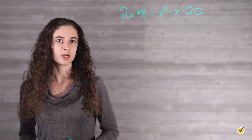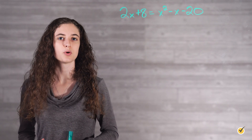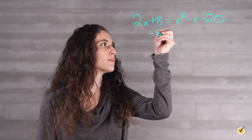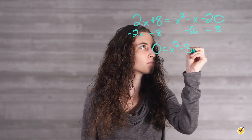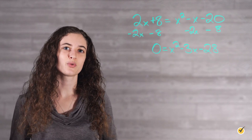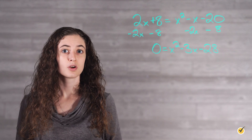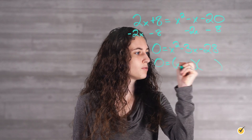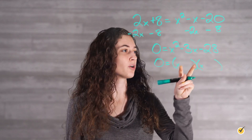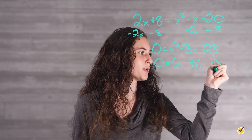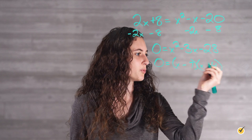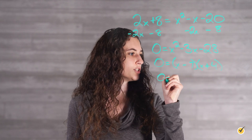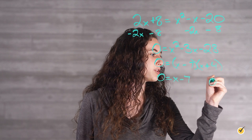In order to solve a quadratic equation for x, we need to get all of our terms on one side and 0 on the other. To do this, we will subtract 8 and 2x from both sides. That gives us 0 equals x squared minus 3x minus 28. We can then factor this equation. We're wanting to reverse FOIL: 28 can be 7 times 4, and we want a negative 3 in the middle, so we subtract 7 and add 4. When we break it apart into two different equations, we get 0 equals x minus 7, or 0 equals x plus 4.